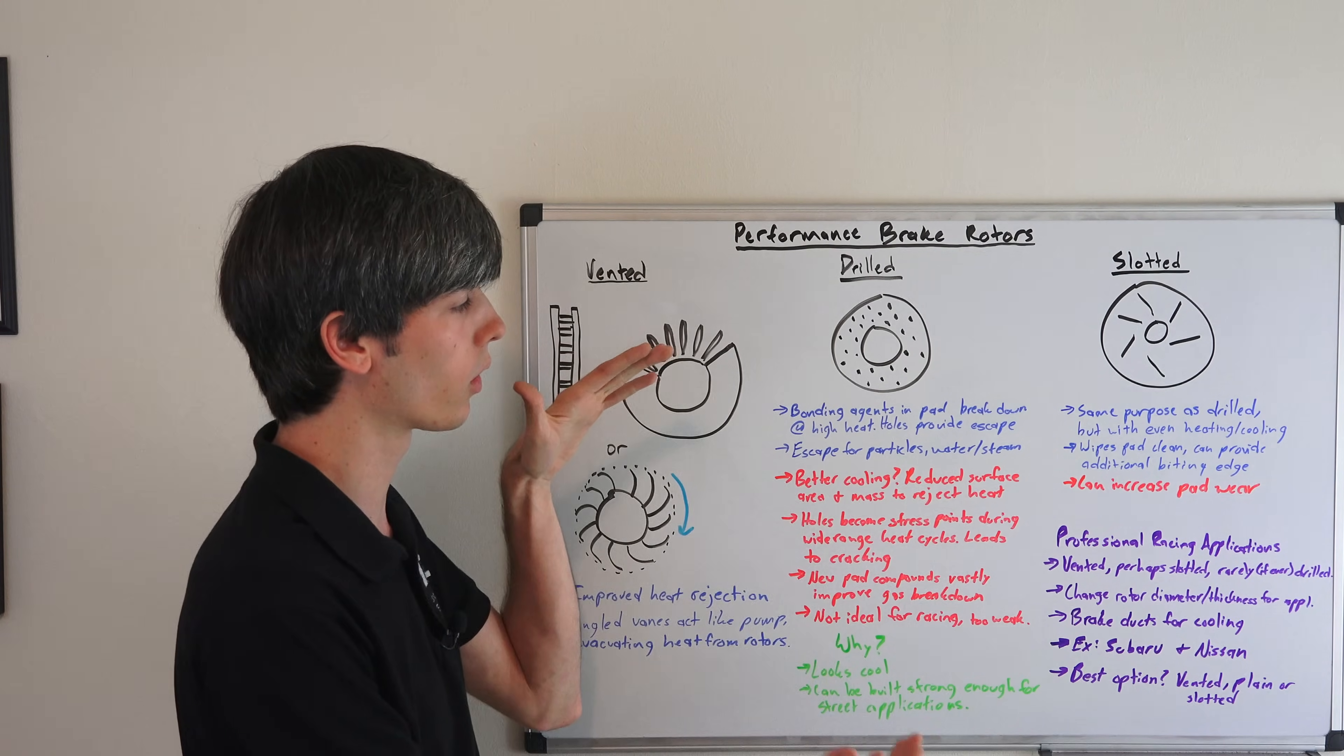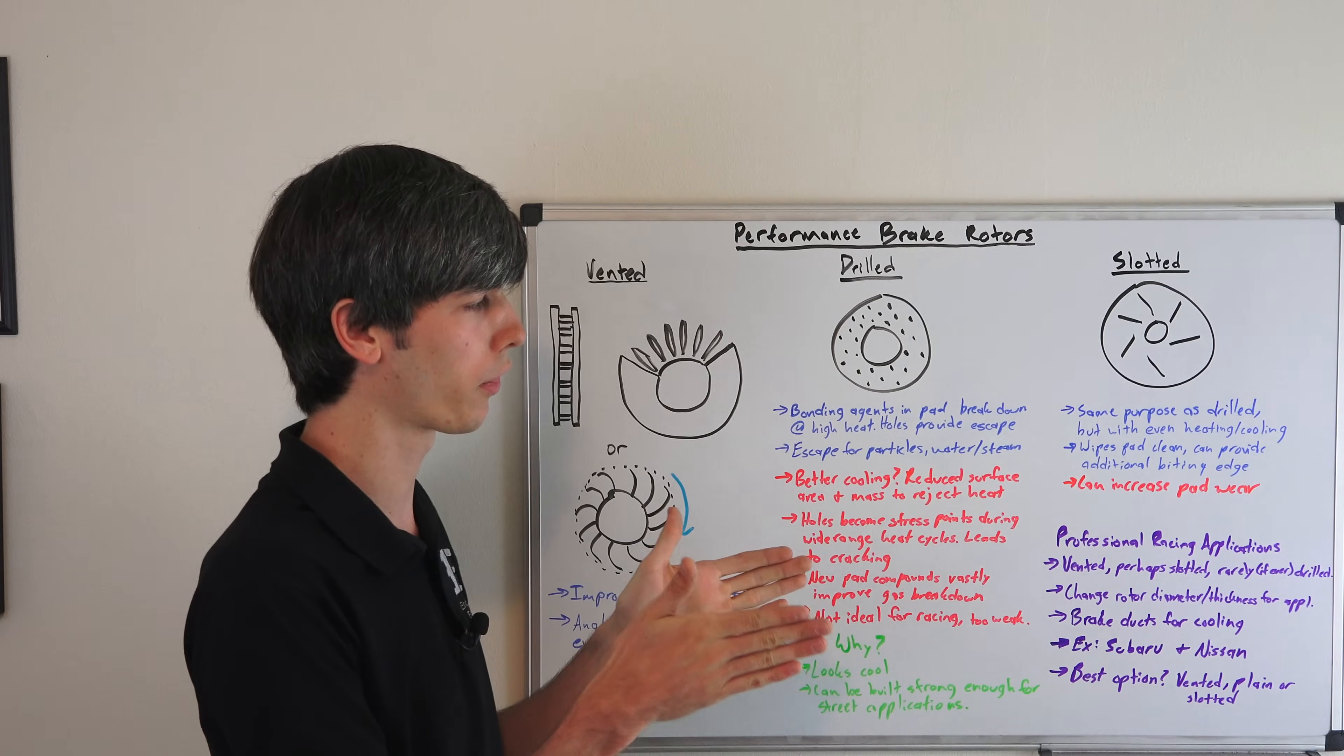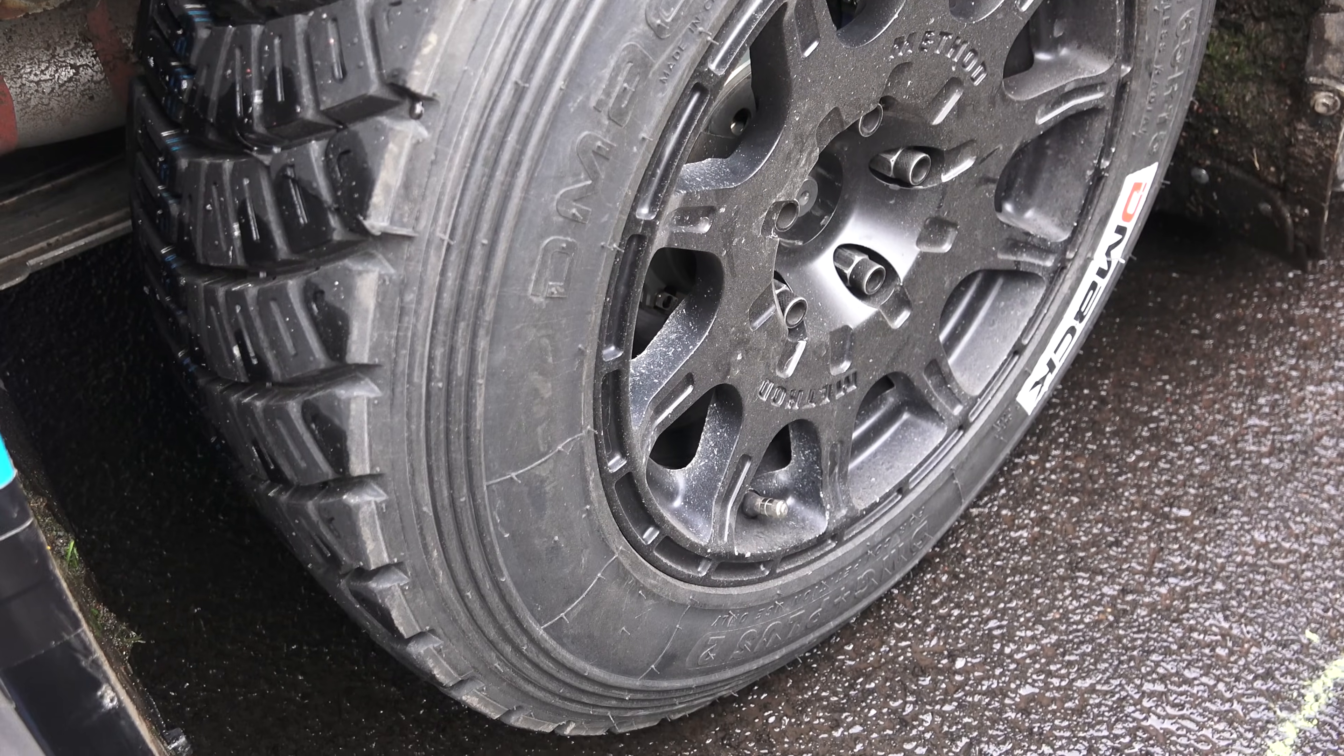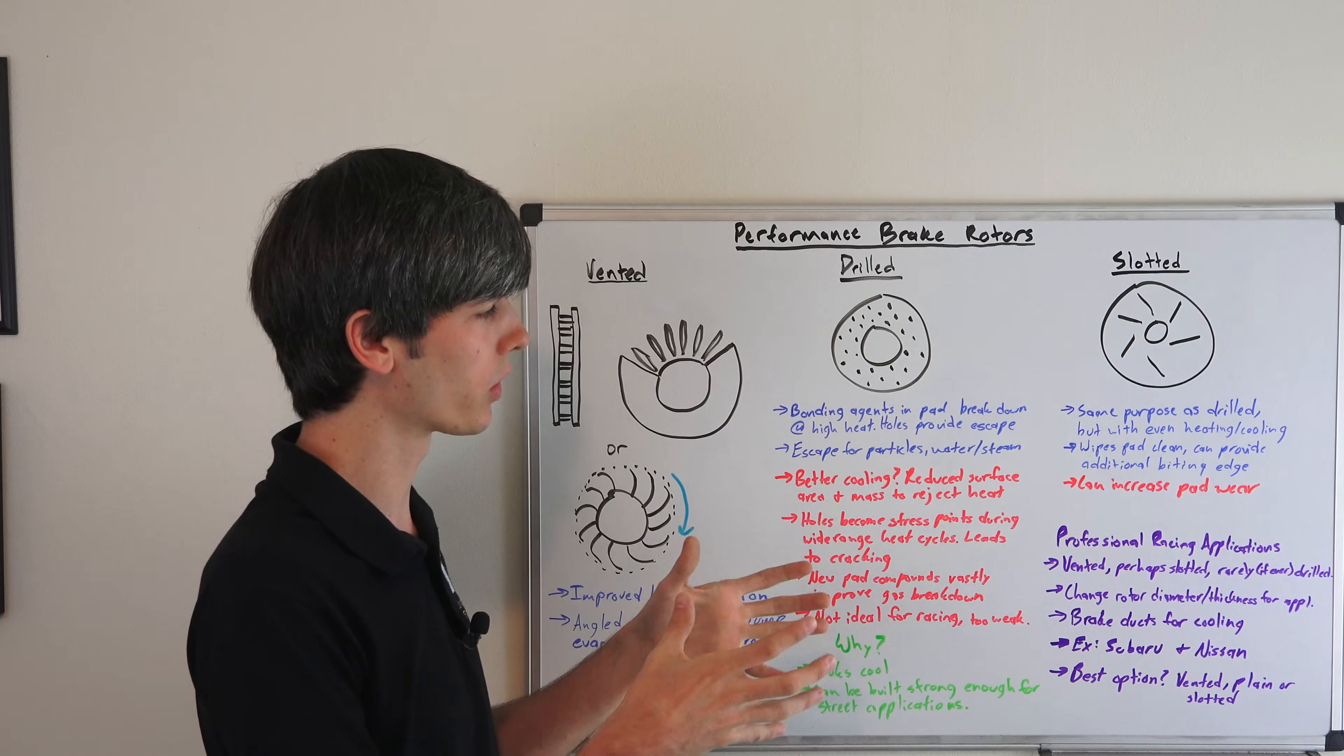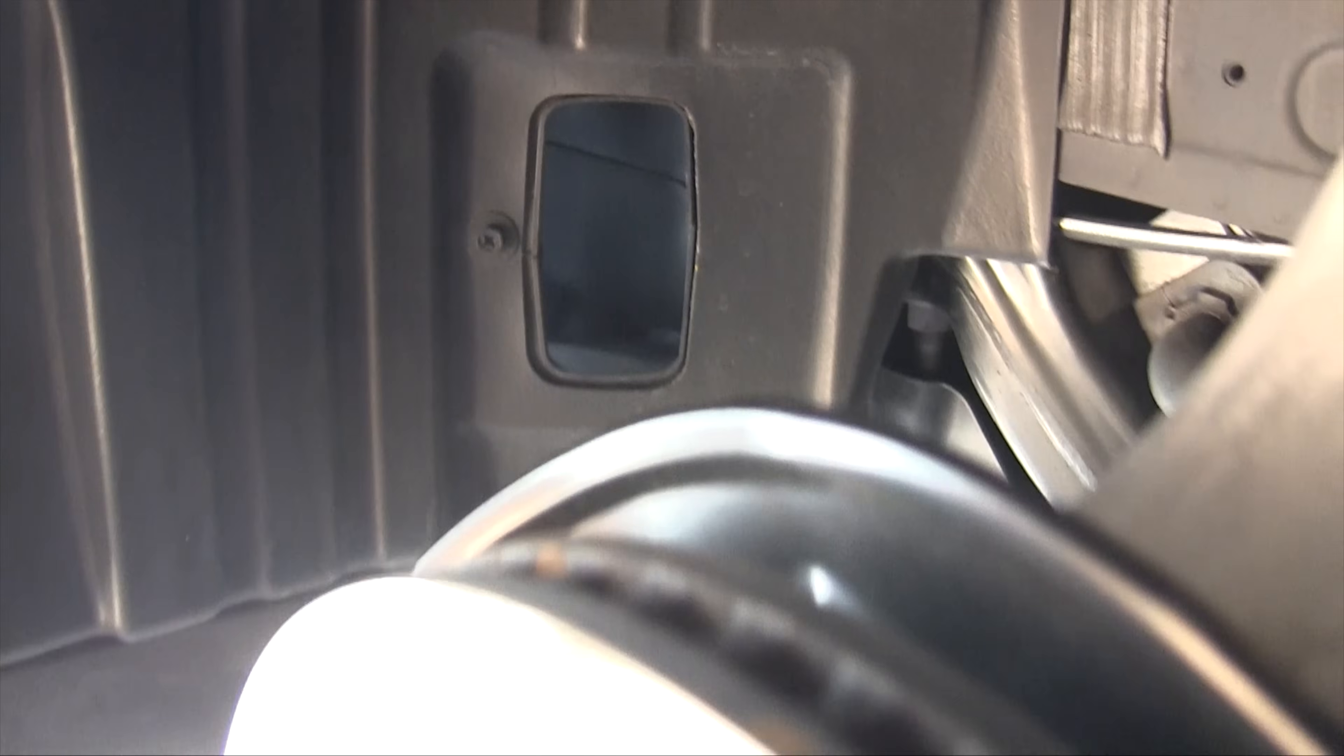You can change the diameter of the rotor, make it larger. But sometimes you're restricted by your wheel size, so you can make it thicker. For example, in rally racing, they're restricted to 15-inch wheels, so that really limits their brake rotor size, so they make them wider. And you've got to make sure that those are well vented because you've got a large mass within that.